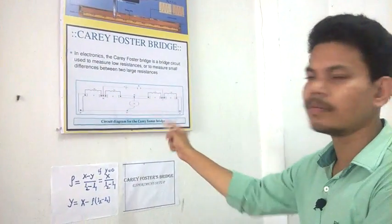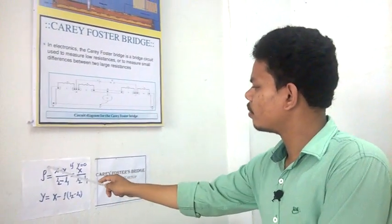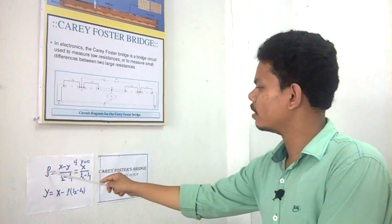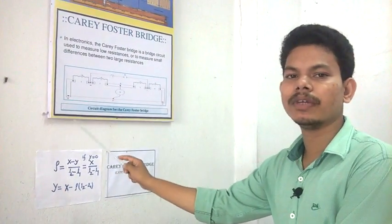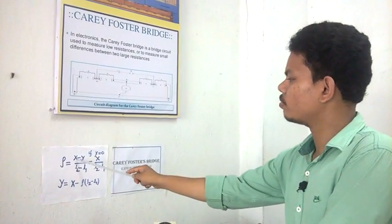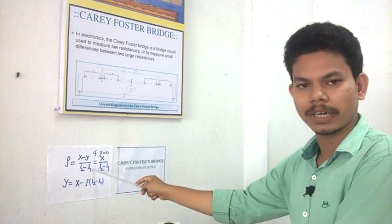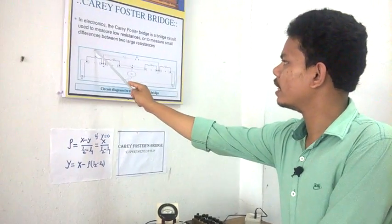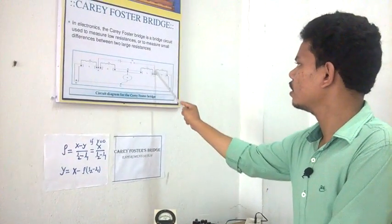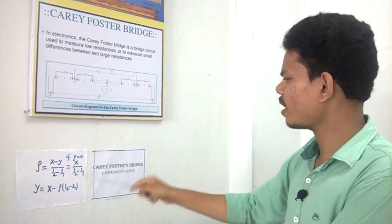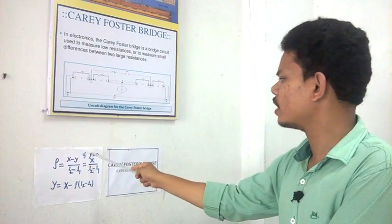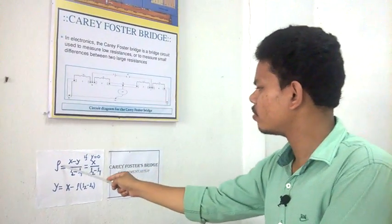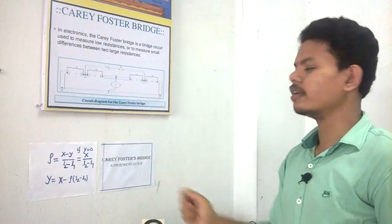This is the basic circuit diagram and this is the working principle: rho means resistance per unit length of this wire equals A x minus y by L2 minus L1. For simplicity, if we take y equals 0, then this equation should be rho equals x by L2 minus L1.